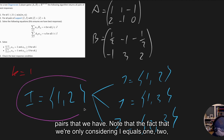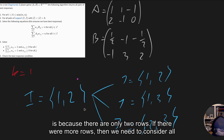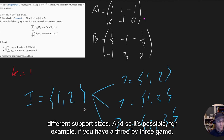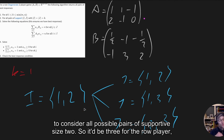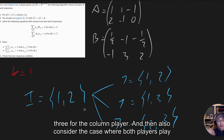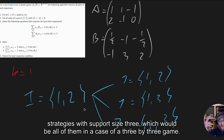Note that we're only considering i equals 1,2 because there are only two rows. If there were more rows, we'd need to consider all different support sizes. For example, in a 3 by 3 game, you'd consider all possible support pairs of size 2 — three combinations for the row player and three for the column player — and also the case where both players play strategies with support size 3.